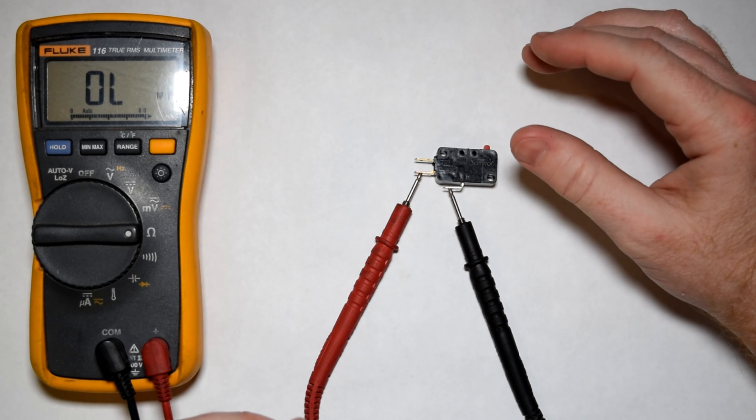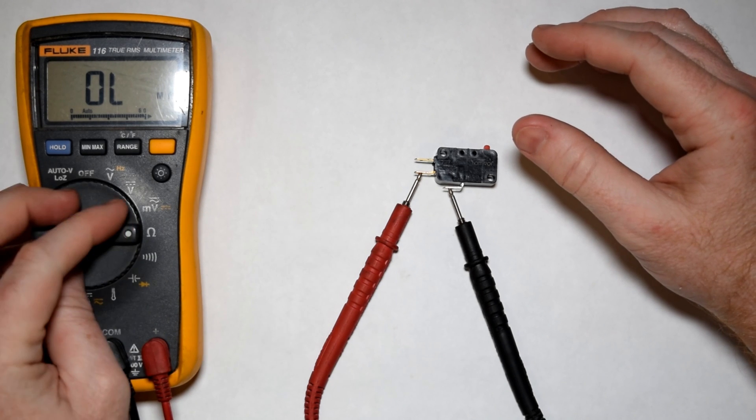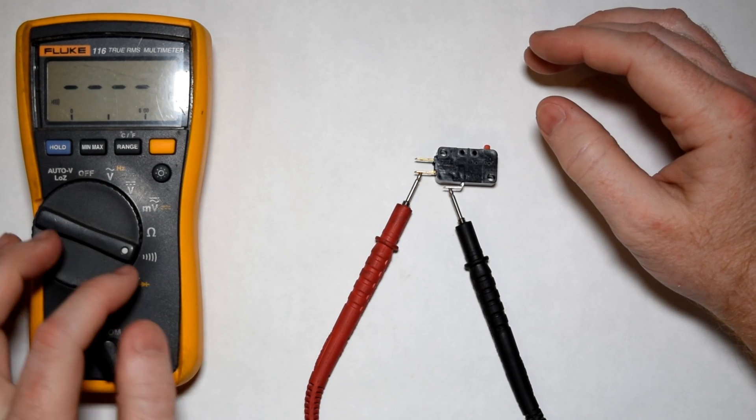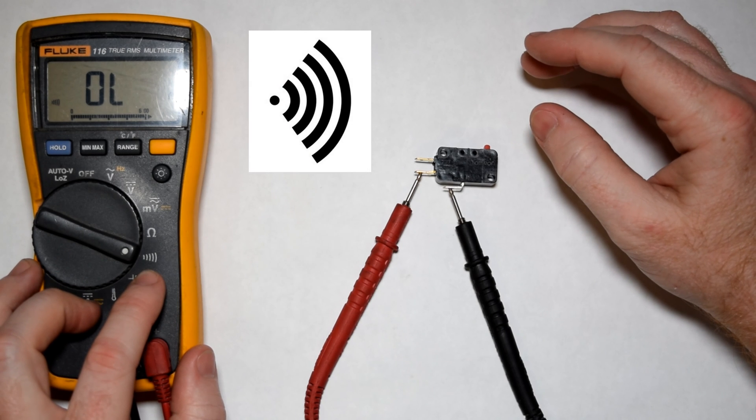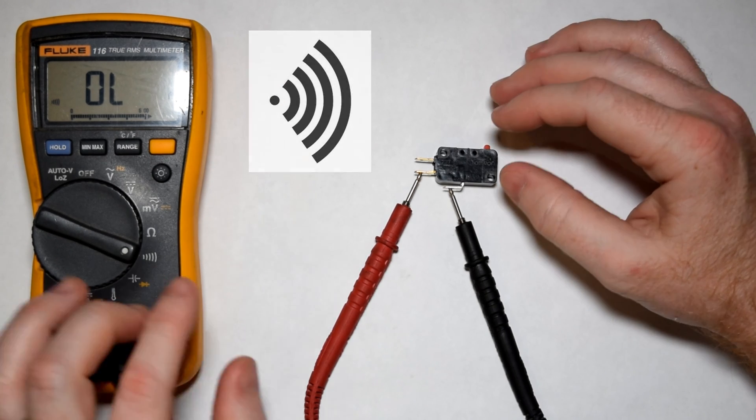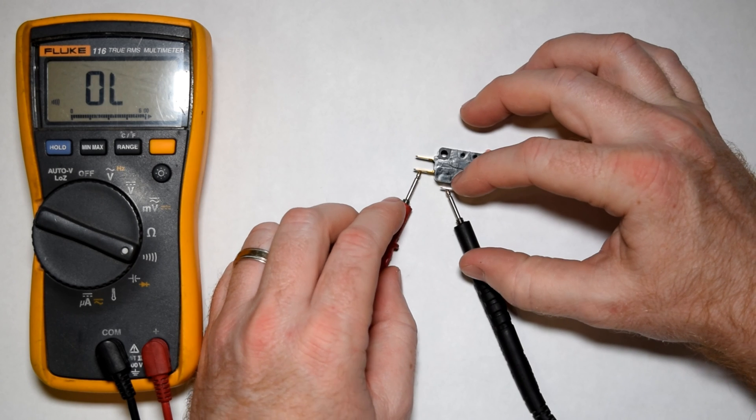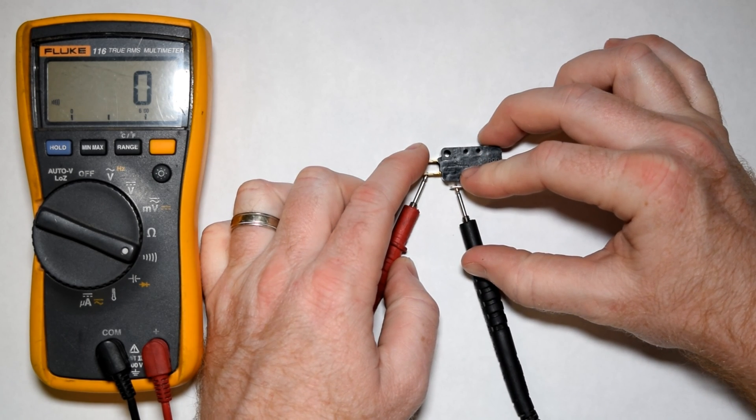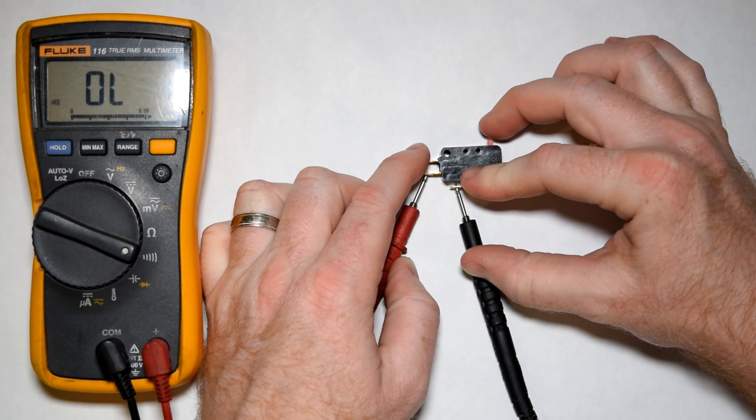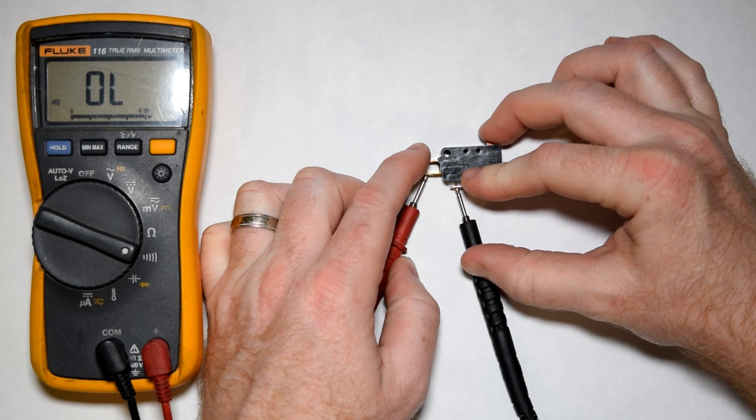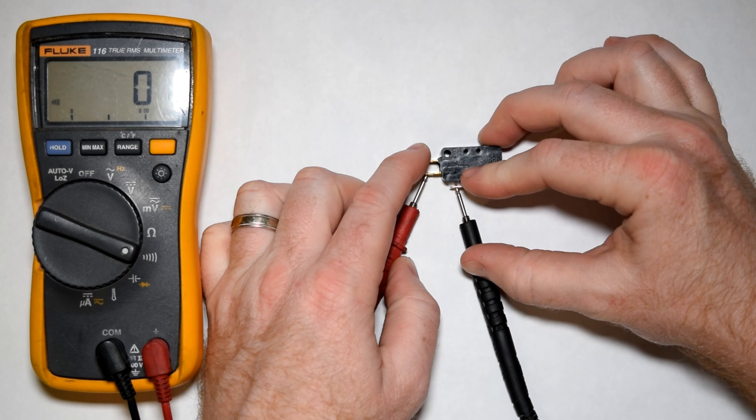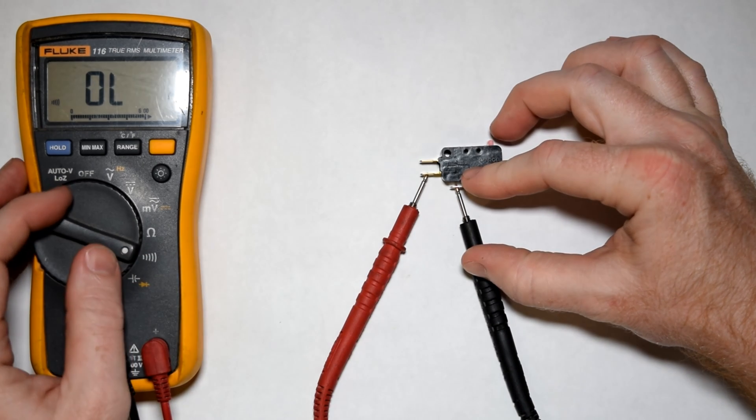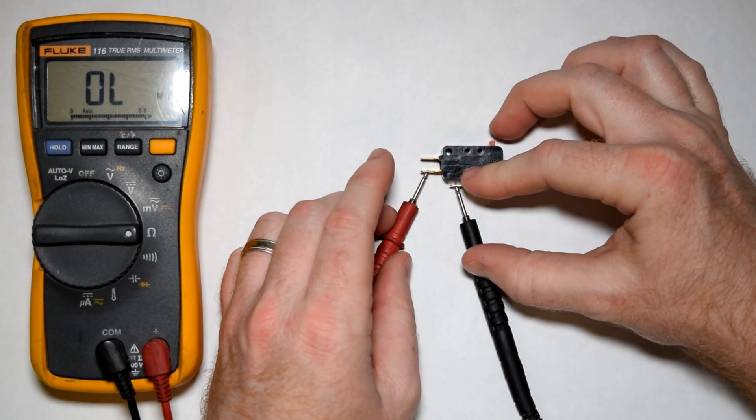Alternatively, this is the ohm test that we're doing. You can also, if your meter has this function, looks like a Wi-Fi symbol, this is the audible continuity test. So right now we're on the normally open circuit and we're going to depress the switch and you get an audible beep. But I want you to notice that it just gives you zero as the reading, does not give you as detailed of a ohms of resistance reading.